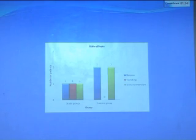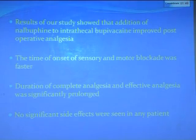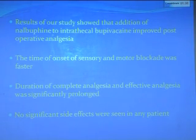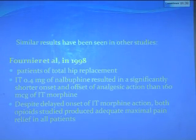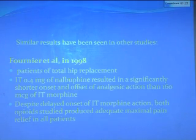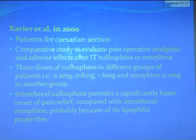The results of the study showed that addition of nalbuphine to intrathecal bupivacaine improved post-operative analgesia. The time of onset of sensory and motor blockade was faster. Duration of complete and effective analgesia was significantly prolonged, and no significant side effects were observed. Fournier et al. in 1998 performed a study in patients undergoing total hip replacement, using 0.4 mg of nalbuphine and comparing with morphine, concluding that both opioid regimens produced adequate maximal pain relief in all patients.